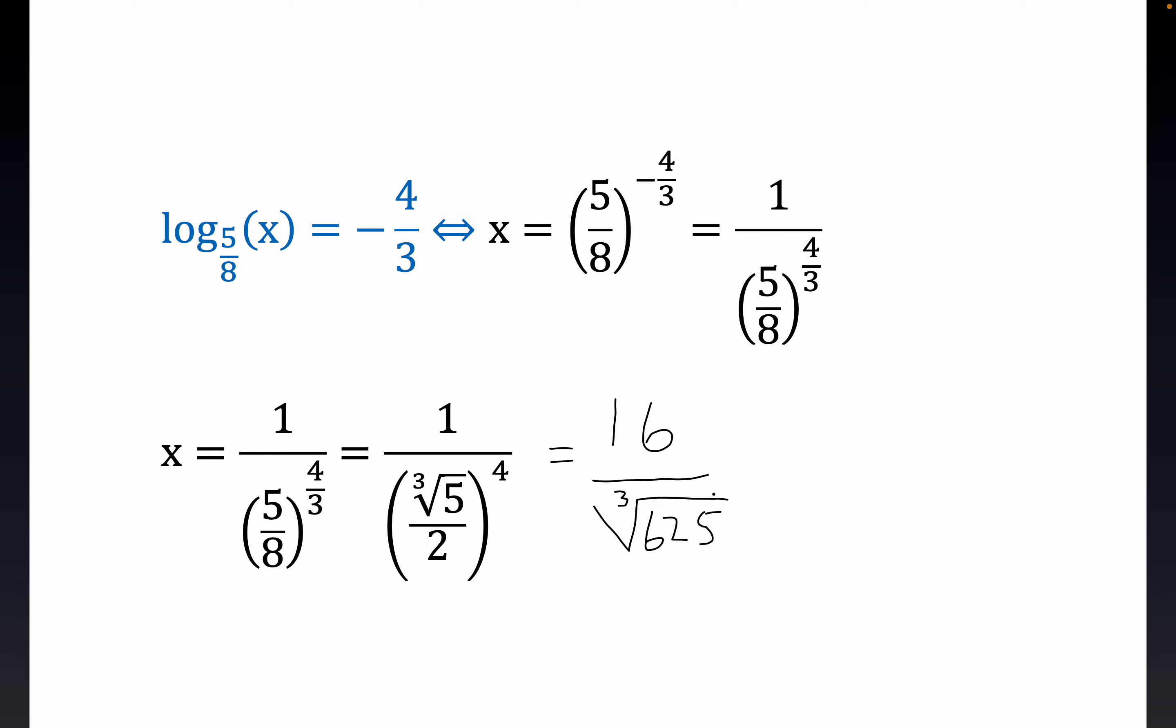Now, this is equal to x. Now, do we know enough about this number to actually figure out what its ceiling would be? This is the answer, but what is its ceiling? Is it a number that we can tell much about? Well, the cube root of 625 is kind of hard to evaluate. We have an integer in the numerator, but we do know that we can rewrite this as 16 over 5, because 125 is a cubic factor of 625, namely 5 times 125 is 625, and so you would get 5 times the cube root of 5.